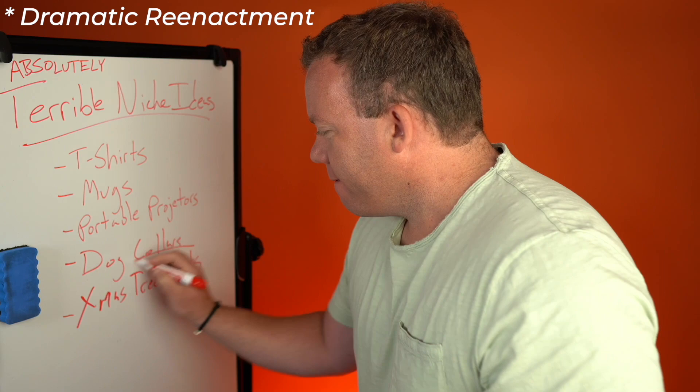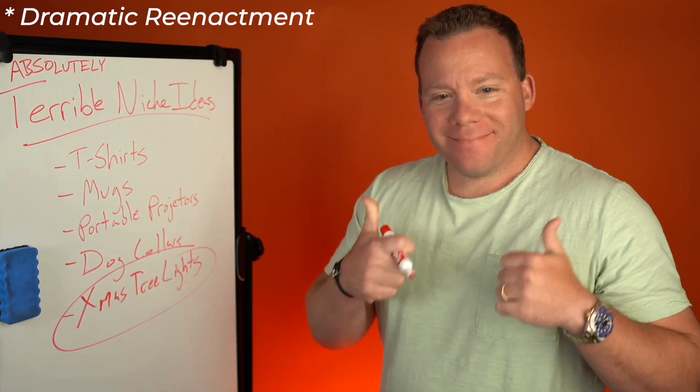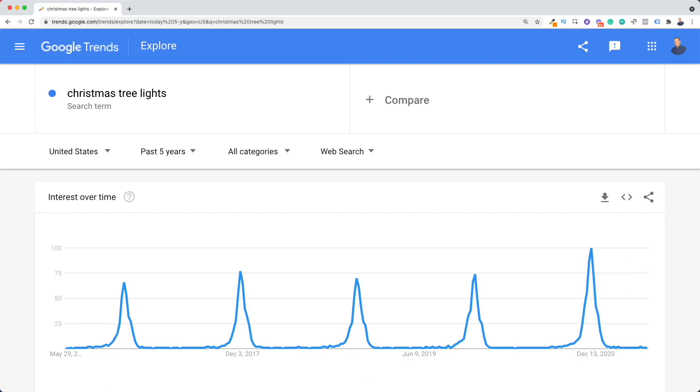Christmas tree lights. Here's why: price point — definitely low. You can get these things for like $10 at Home Depot, CVS, Target, anywhere — a few hundred lights for ten dollars, so the price point is way, way down there. Also local availability — go to any store around Christmas and you can get them. You don't need any special Christmas tree lights that you'd go to the internet for.